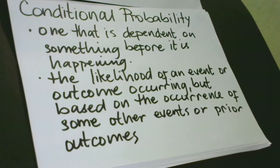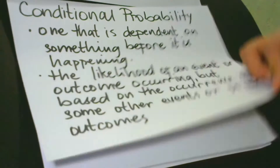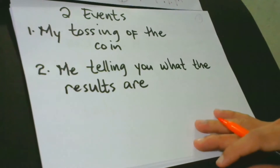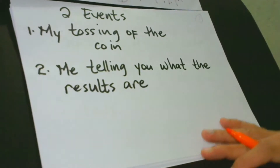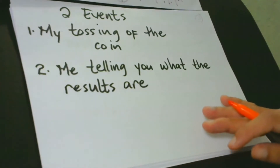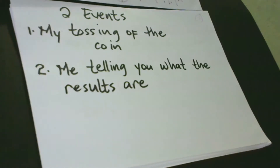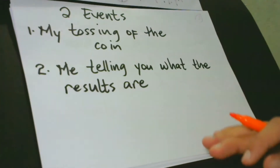Conditional probability is also defined as the likelihood of an event or outcome occurring based on the occurrence of some other events or prior outcomes. So we are considering events here. For better and clearer understanding, let's have this example: I toss a coin and I will tell you what the results are. You cannot witness my tossing of the coin — for instance, I am in my room and you are outside waiting for me to tell you the result. So we have two events here.